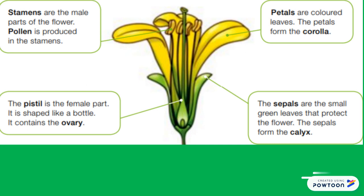Here you are the parts of a flower. Stamens are the male parts of the flower. Pollen is produced by the stamens. Petals are colored leaves; the petals form the corolla. The sepals are the small green leaves that protect the flower; the sepals form the calyx. And finally the pistil, which is the female part. It is shaped like a barrel and it contains the ovary.